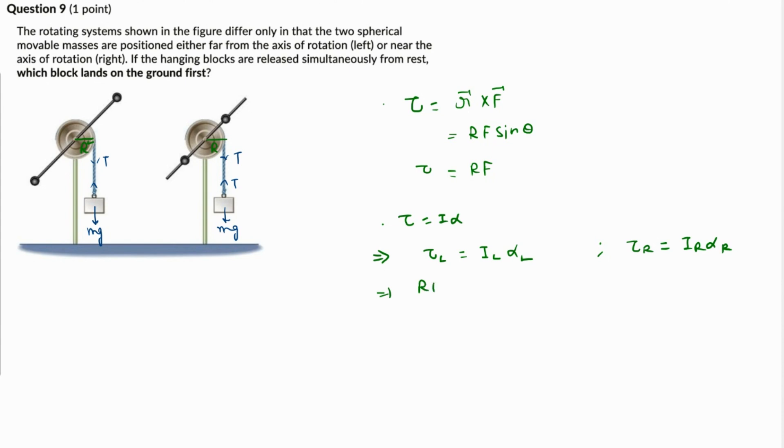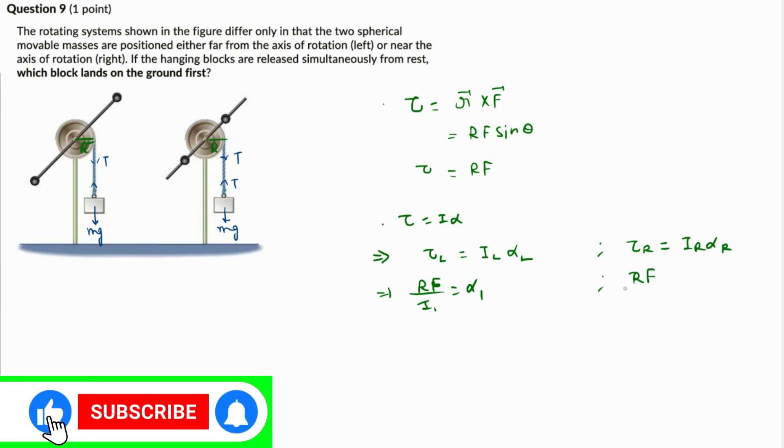And τ_right will be equal to I_right α_right. Now the torque is the same, which is rF, so α₁ equals rF over I₁. And here the torque is rF once again, which is α_r equals rF over I_r. This is the left one.